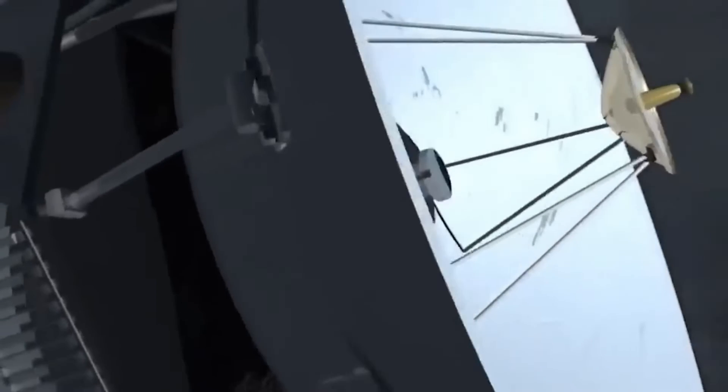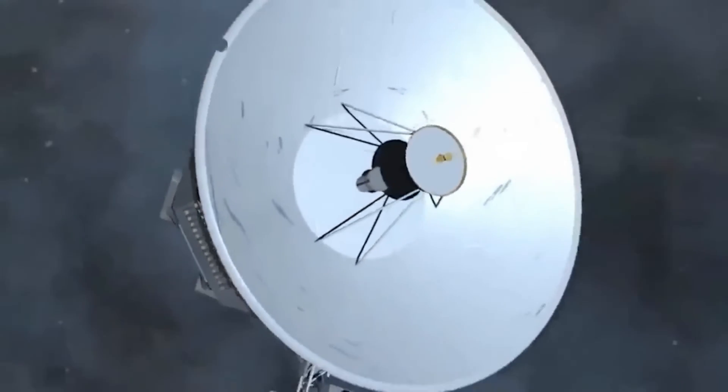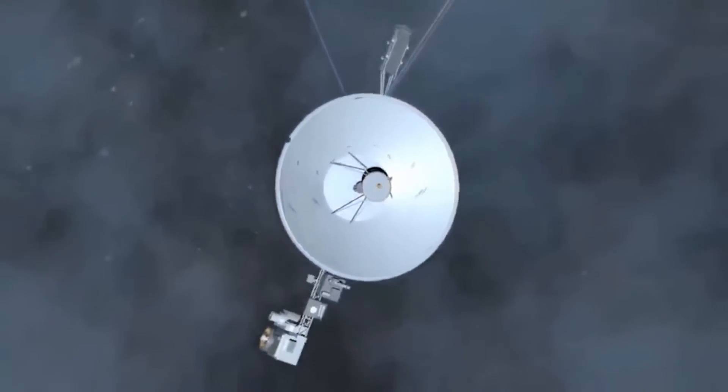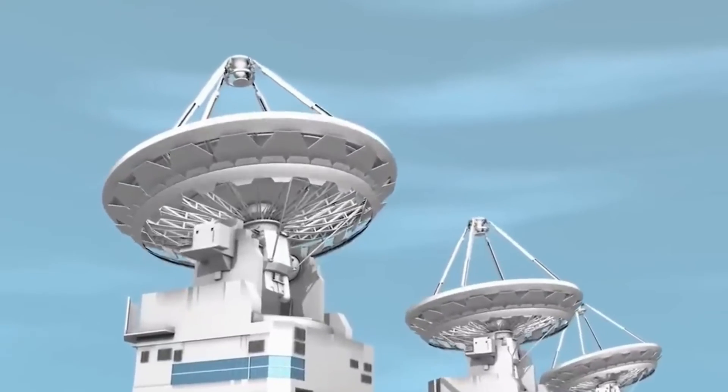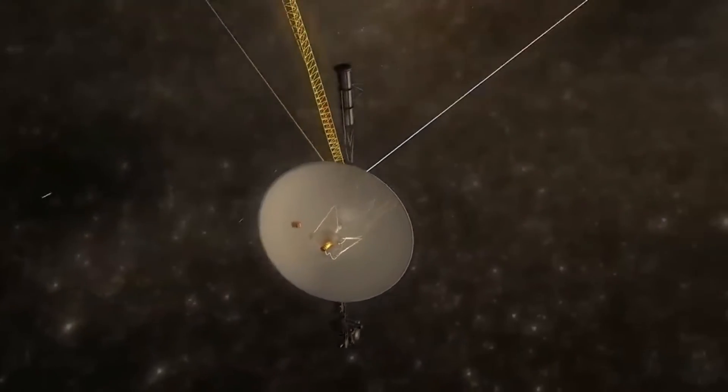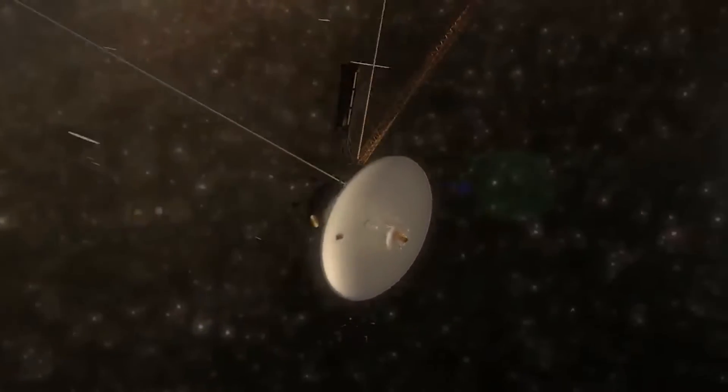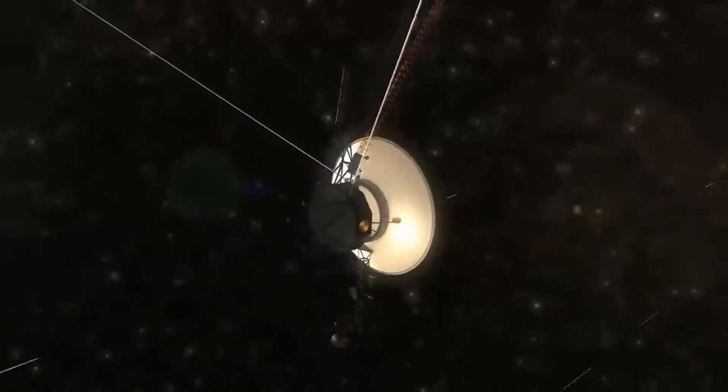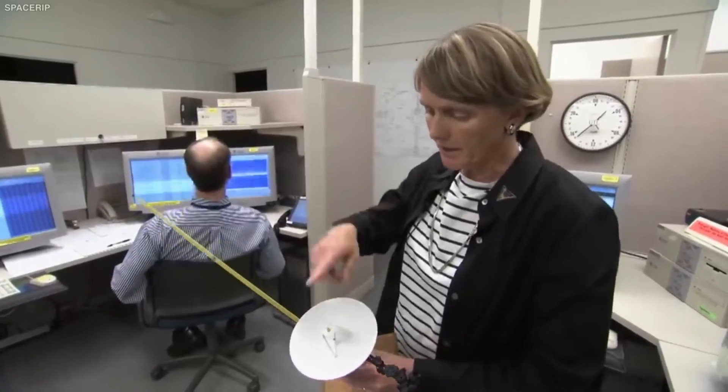Additionally, the spacecraft is now operating on limited power. With its instruments and systems running at reduced capacity, NASA has gradually turned off non-essential instruments such as the Planetary Radio Astronomy Instrument, Ultraviolet Spectrometer, and Infrared Interferometer Spectrometer.